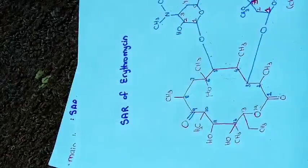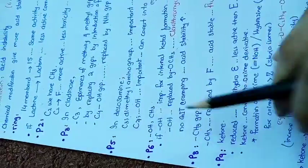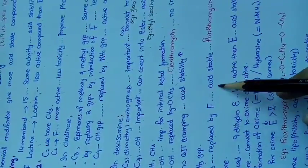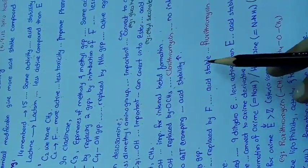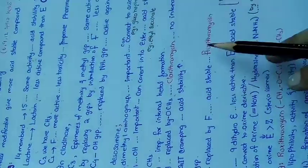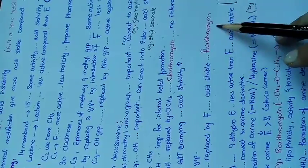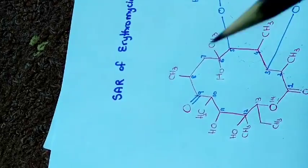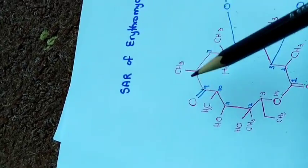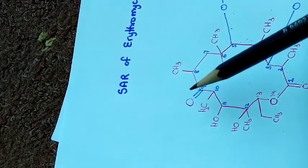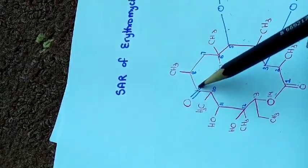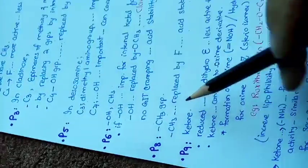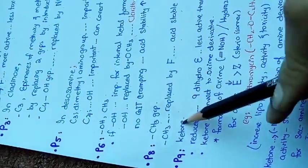At position 8 we have a methyl group. If this methyl group is replaced by fluorine, the compound becomes acid stable — for example, flurithromycin.